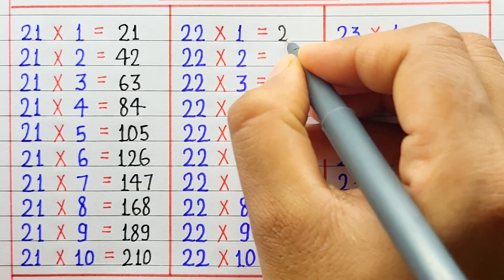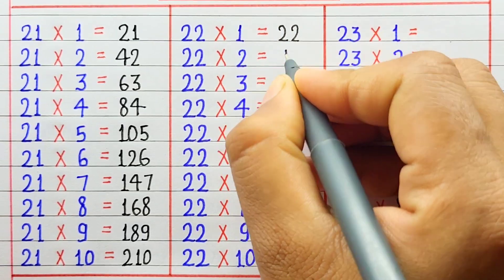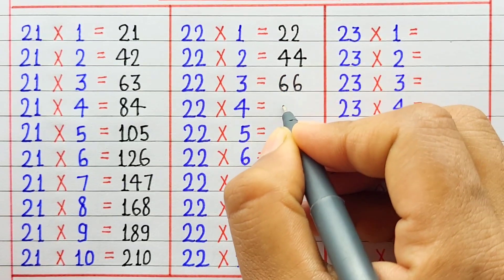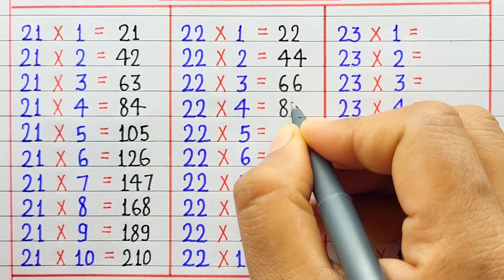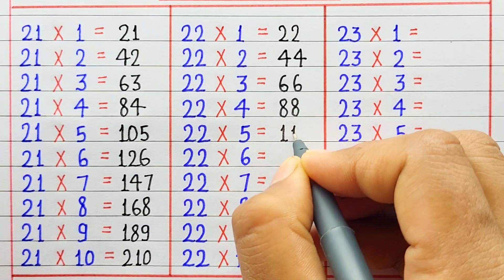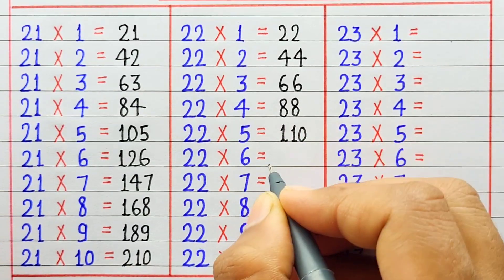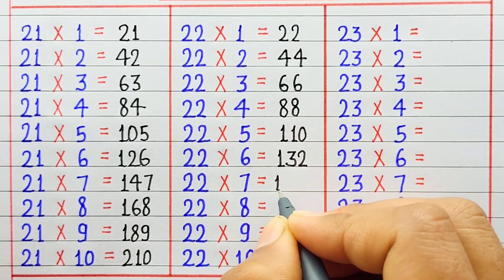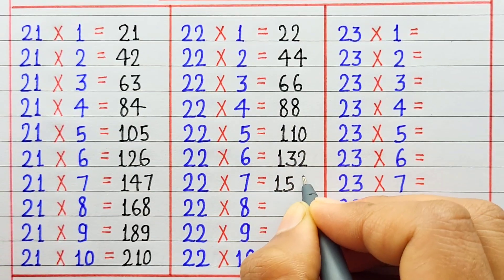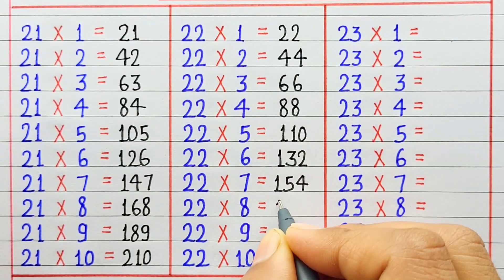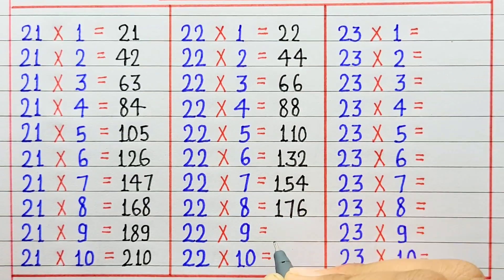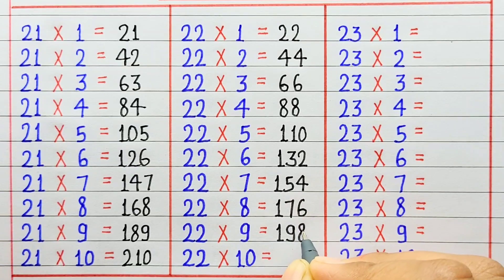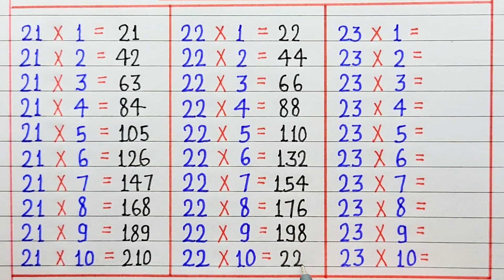22 1 ja 22. 22 2 ja 44. 22 3 ja 63. 22 4 ja 88. 22 5 ja 110. 22 6 ja 132. 22 7 ja 154. 22 8 ja 176. 22 9 ja 198. 22 10 ja 220.